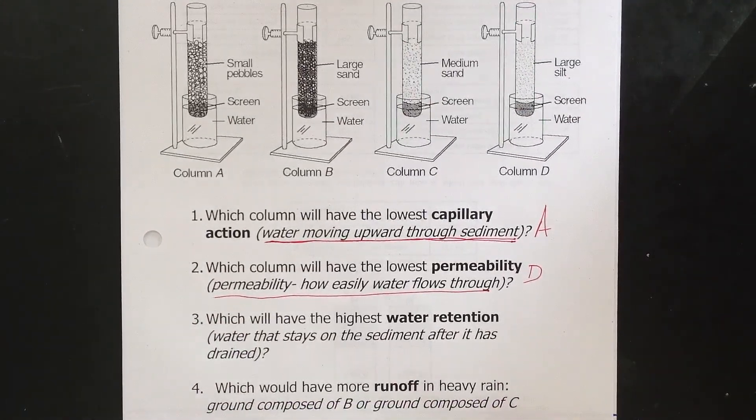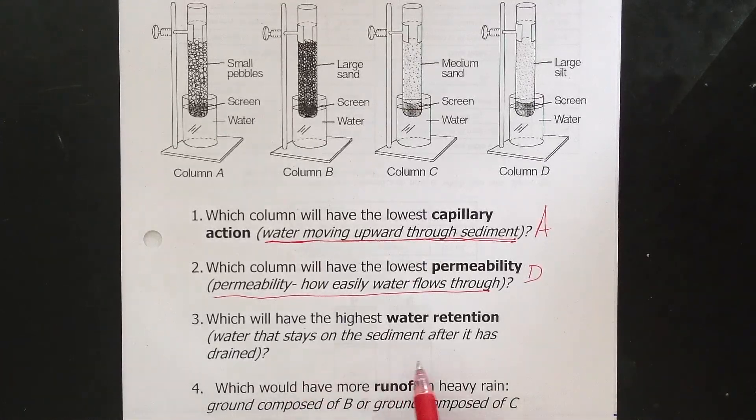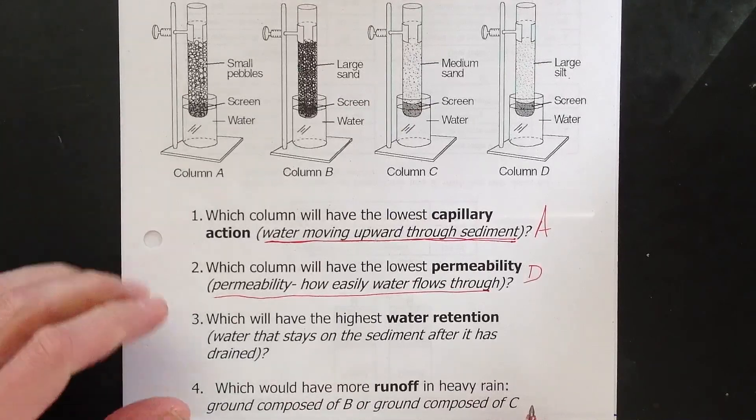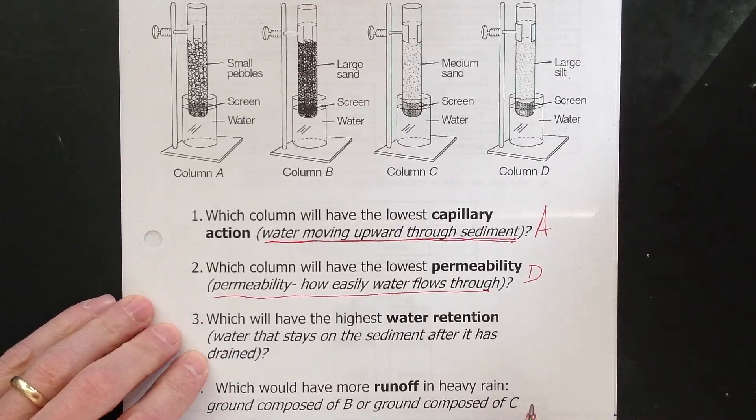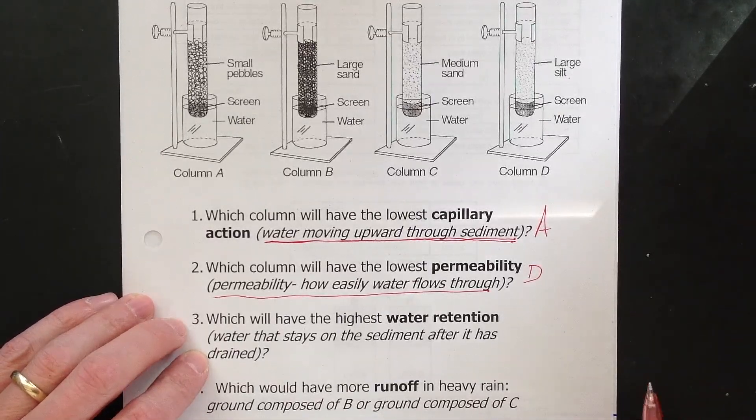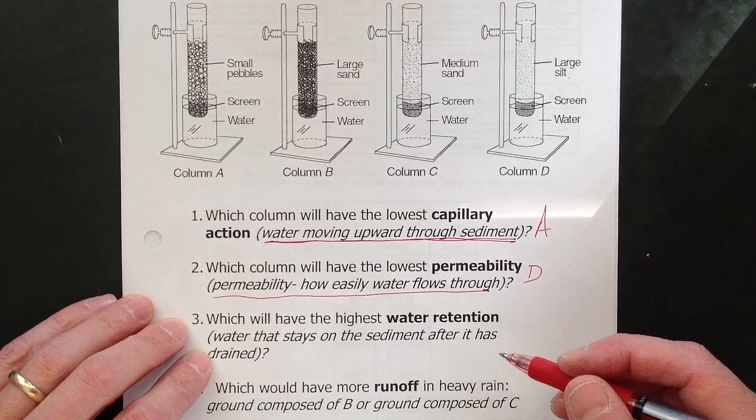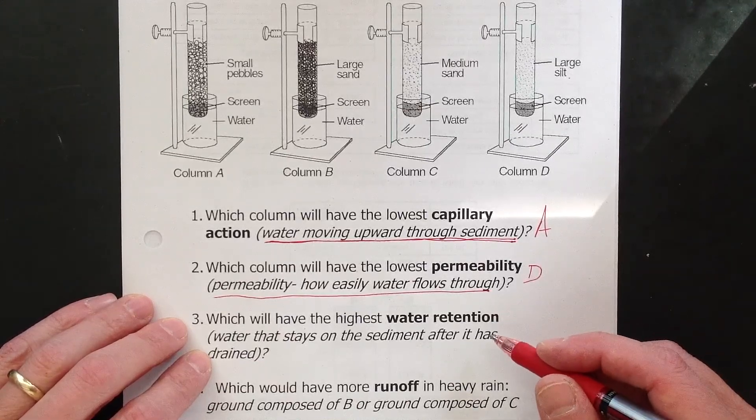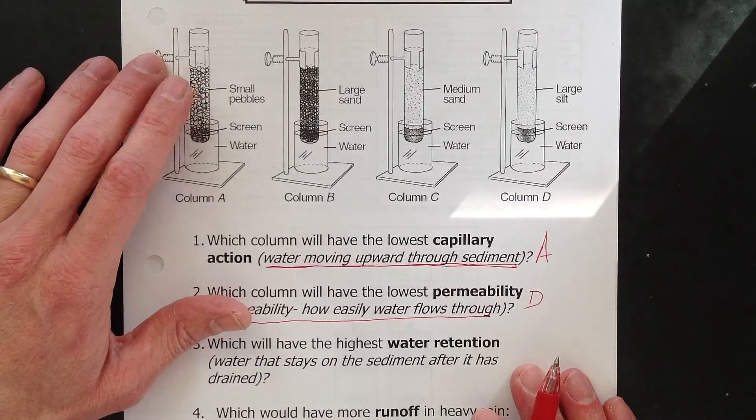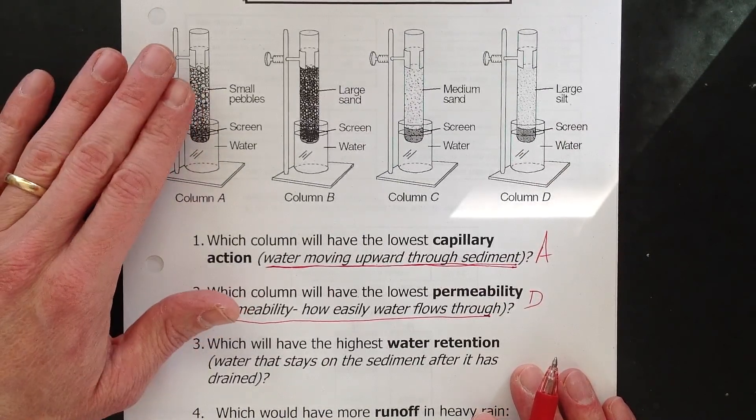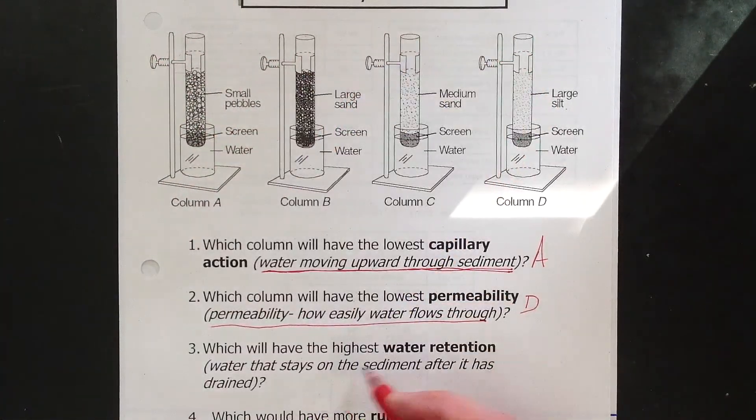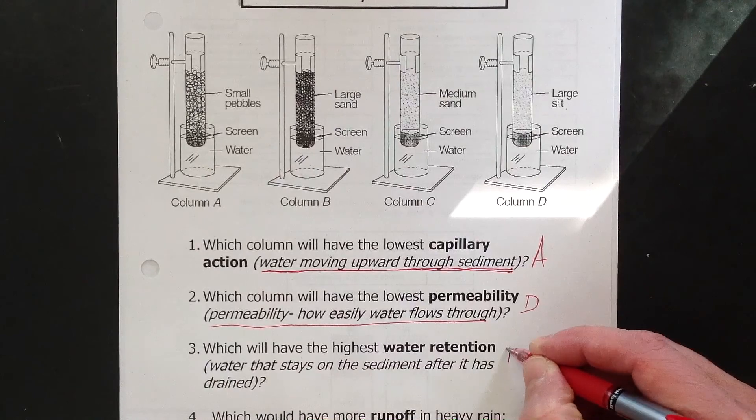Three. Which will have the highest water retention? And that is water that stays on the sediment after it has drained. So this is after a permeability experiment, water flowing through. How much still stays in the sediment does not come out. It clings to the surface of the sediment within the spaces. That's what causes water retention. And you need to know the smaller sediment will have the most water retention. And the larger sediments will have the least. Because there's less surface area here and the spaces are larger between them. Will hold less water. And this will hold the most. So I'm looking for highest water retention. That is D.